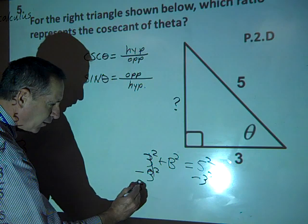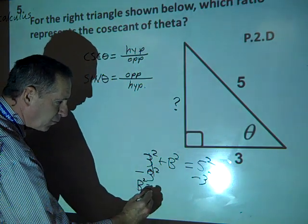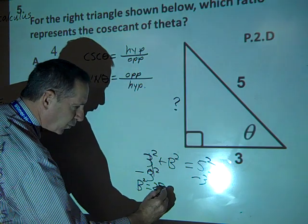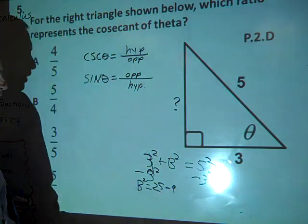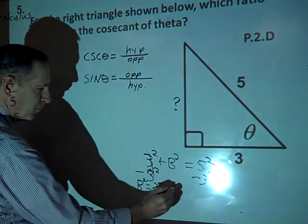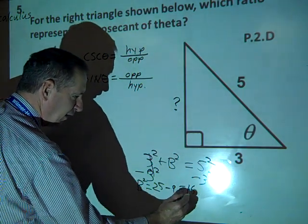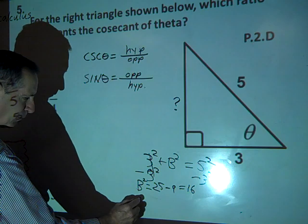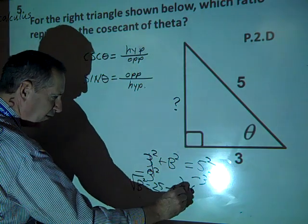And so b squared equals, and what's 5 squared? 25. And 3 squared? 9. Minus 9. So b squared equals 16. All right, how do we solve for b now? Get the square root of 16. Take the square root of 16, square root of both sides. So b equals 4.